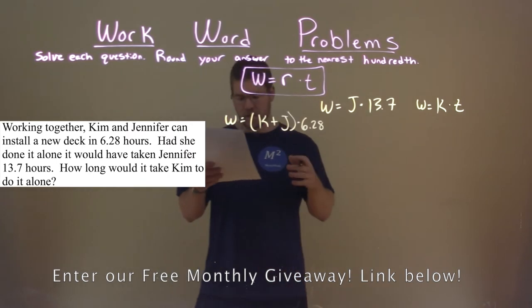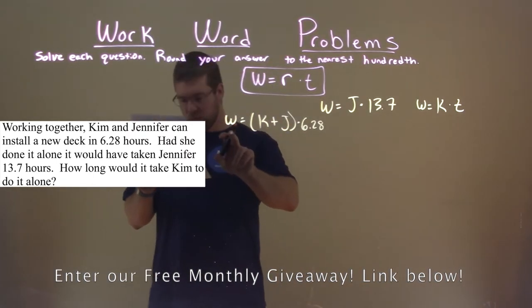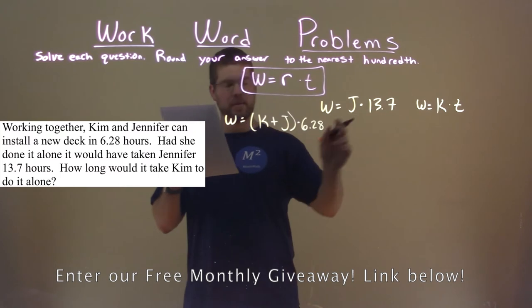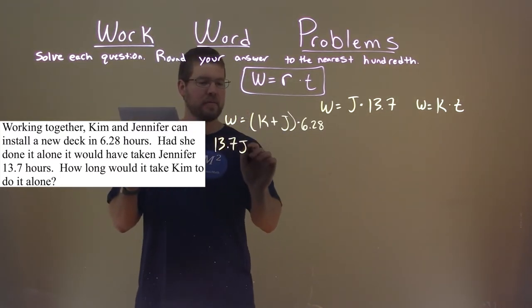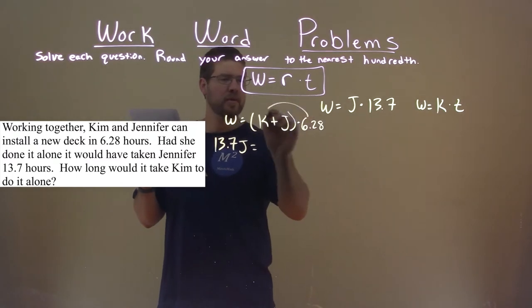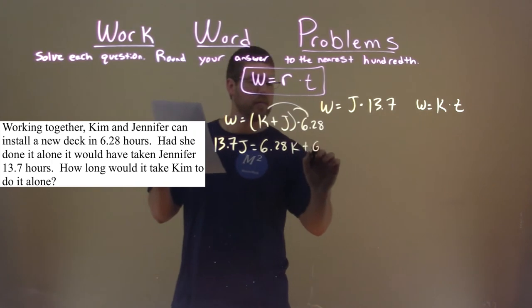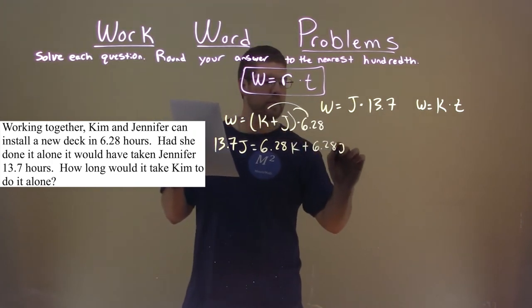So now we're going to adapt this sum. We know this work is equal to J times 13.7, so I'm going to rewrite this as 13.7 J, flip it around, and I'm also going to distribute the 6.28 to both parts: 6.28 K and 6.28 J.